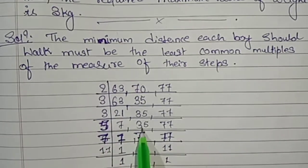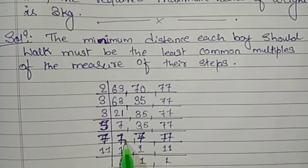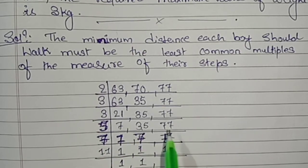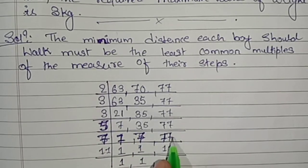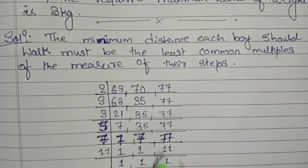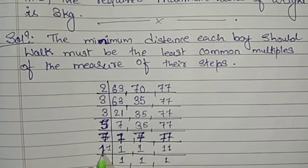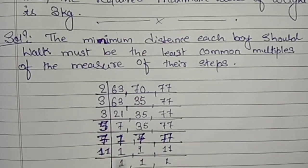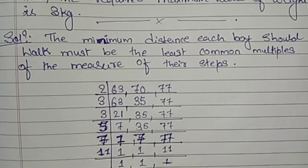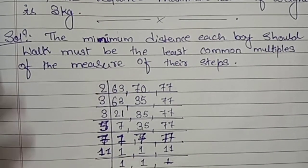From 5: 35 can go. So 7 will be 7, 5 sevens are 35, 77 cannot go. Now it can go from 7: 7 ones are 7, 7 ones are 7, 7 elevens are 77. Now 11 will go from 11, so 11 ones are 11. So we got all ones.